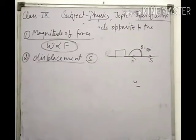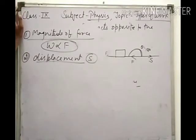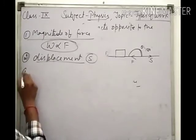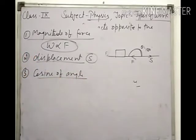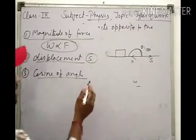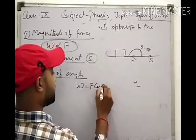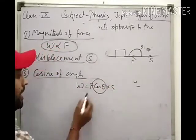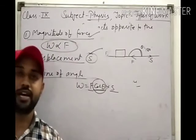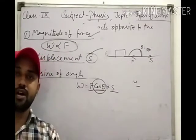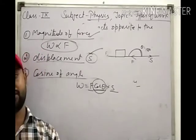The second factor is the displacement or distance traveled by the object. The more distance the object travels, the greater the work done — specifically the displacement of the object in the direction in which force is applied. The third factor is the cosine of the angle. The formula is W = F cosθ × s. Work done depends on force, displacement, and cosθ — the angle between direction of force and direction of motion.